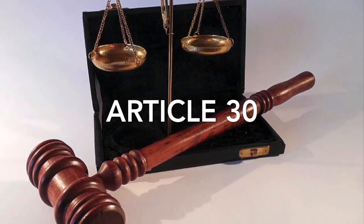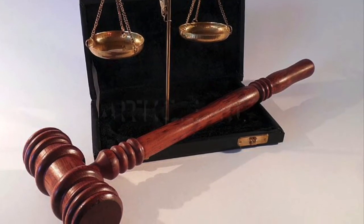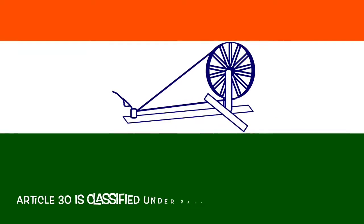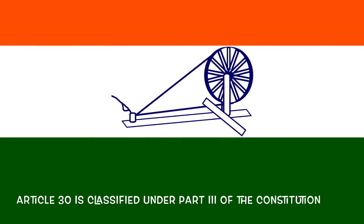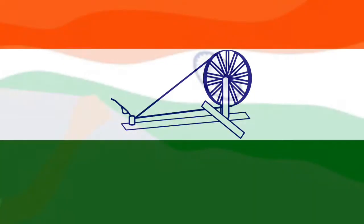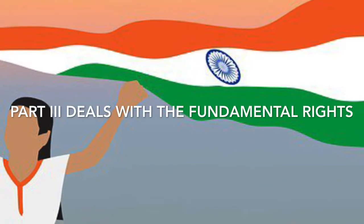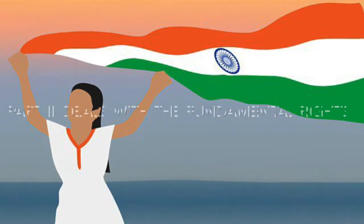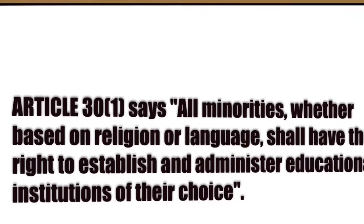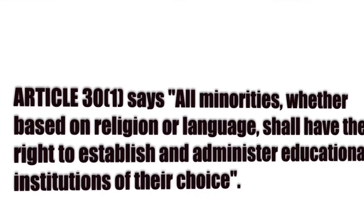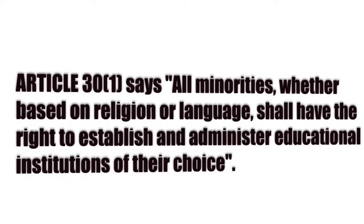So what is Article 30? Article 30 is classified under Part 3 of the Indian Constitution, which covers the fundamental rights provided to the citizens of India irrespective of their caste, religion, and sex. Article 30 of the Indian Constitution states that all minorities, whether based on religion or language, shall have the right to establish and administer educational institutions of their choice.